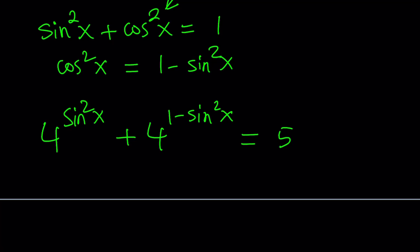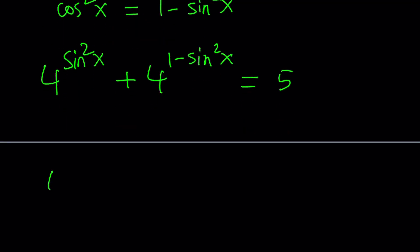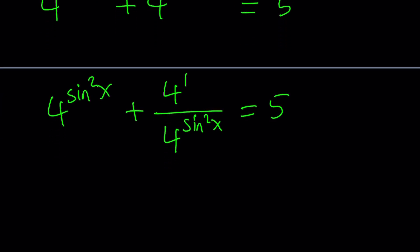Now what we're going to do next is using properties of exponents. We're going to write this difference of exponents as a quotient. So we're going to write it as 4 to the power sine squared x plus 4 to the power 1 divided by 4 to the power sine squared x. Because when you divide powers with the same base, you basically subtract the exponents. So we're kind of using that rule backwards. a to the power m divided by a to the n is a to the power m minus n. And of course, you can use it either way.